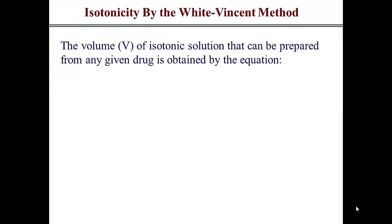In this video, we're going to talk about the White-Vincent method and how you use it to adjust tonicity of various solutions. Typically for ophthalmic and sometimes nasal preparations, you have your active ingredient and add a specified volume of purified water to form an isotonic solution. After that, you add a sufficient volume of an isotonic buffered solution to reach the total volume of your preparation. The question is: how do you know how much purified water to add? That's where we use the White-Vincent equation.